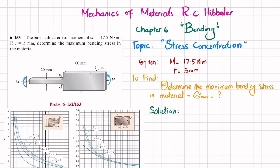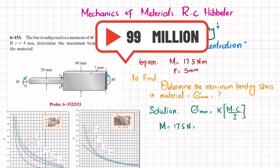Let's start with the solution. The maximum bending stress due to stress concentration is equal to K times M times C divided by I, where K is the stress concentration factor, which can be obtained using figure 6-43. The moment M is given as 17.5 Newton meters.